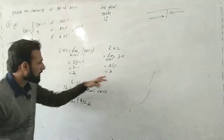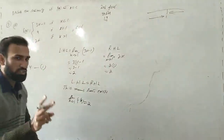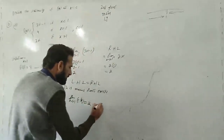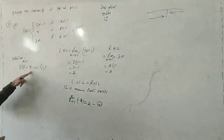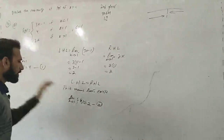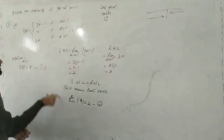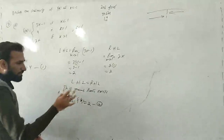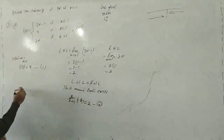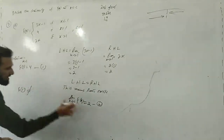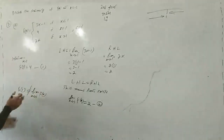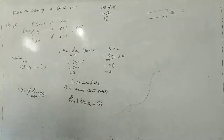Ab function ki value 1 par hai 4, aur limit ki value 1 par hai 2. Kabhi bhi 4, 2 ke equal nahi hota. Iska matlab do conditions to fulfill hui hain — function bhi defined tha, limit ne bhi exist kiya — lekin function ka aur limit ka answer same nahi aaya. F of 1 is not equal to limit x approaches to 1 of f(x). Teesri condition fulfill nahi hui.